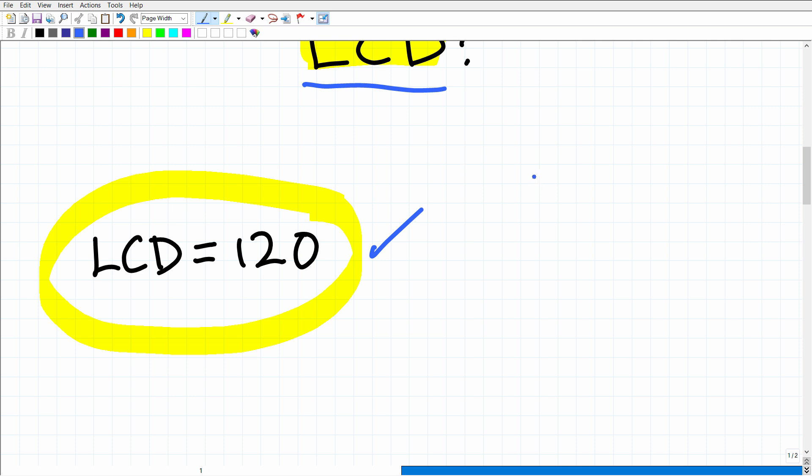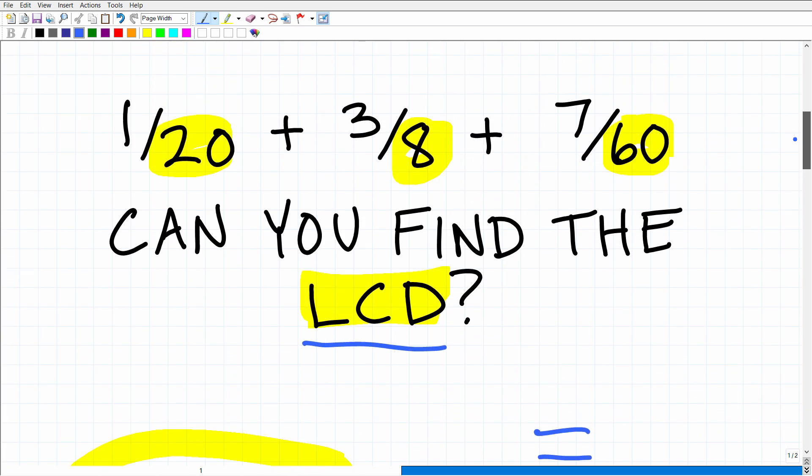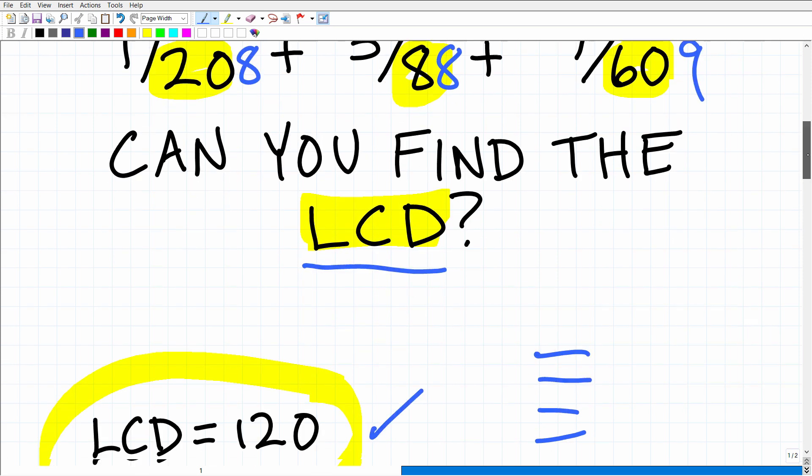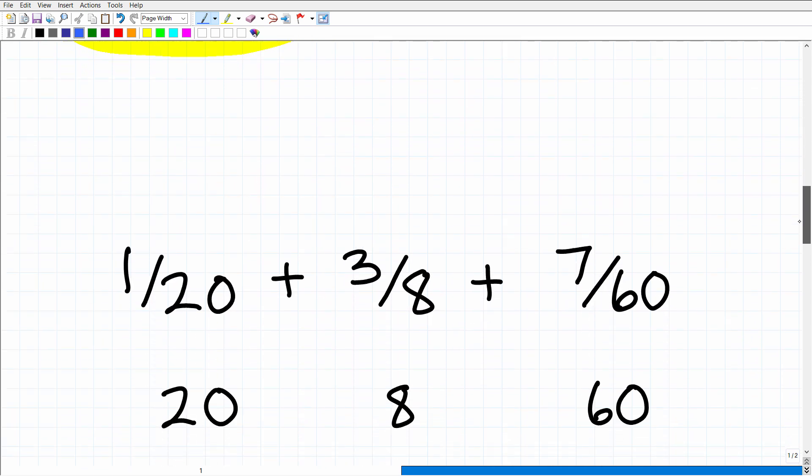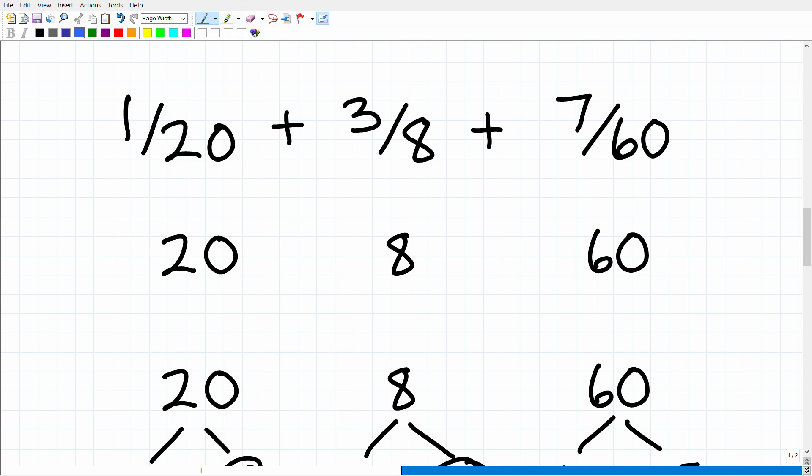The next part is how do you find the LCD? And these values here are not that difficult. I could certainly have made this problem much more challenging. I could have put, like, 208, 88, and maybe 609 or something like that. This would have been a much more difficult problem. But nevertheless, the procedure doesn't change. So let's go ahead and talk about how to do this problem. All right, so the first thing is when you're talking about finding the lowest common denominator, we need to just take into account the denominators of the respective fractions that we're looking to add or subtract. So here we're talking about 20, 8, and 60.